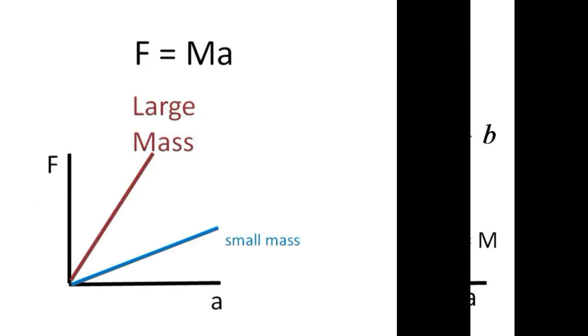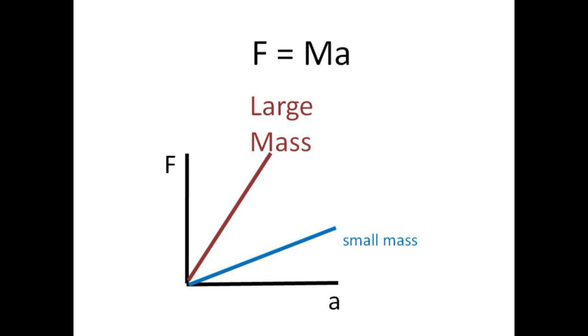The experiment will be carried out twice: once with a single cart with its smaller mass, and secondly with two carts with their combined masses. Both accelerating larger mass should lead to a steeper slope in the plot of force versus acceleration.